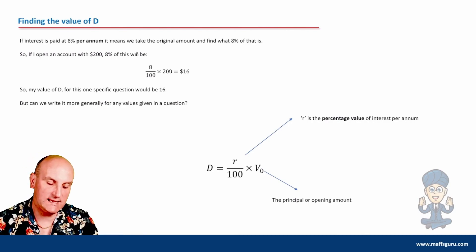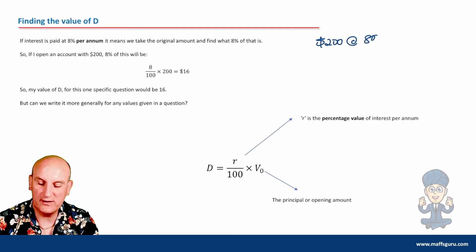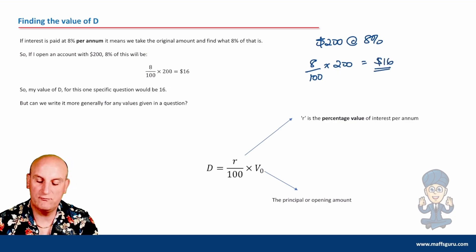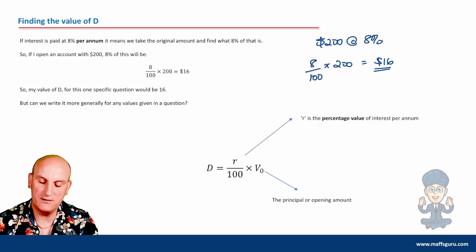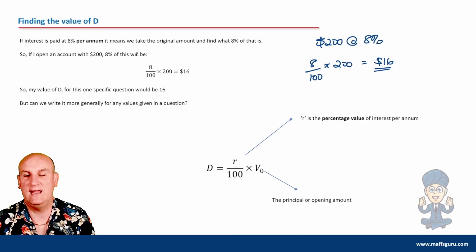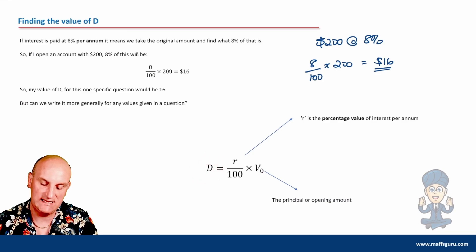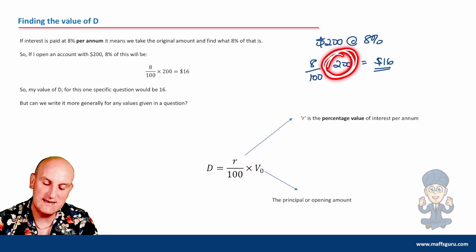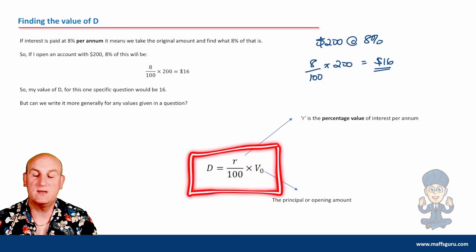To find the value of D, if I had $200 at 8% interest, I would calculate 8 divided by 100 times 200, which gives me $16. The general rule is that the simple interest D equals R divided by 100, times V0 — where R is the interest rate and V0 is the initial amount. This formula can become massively important.